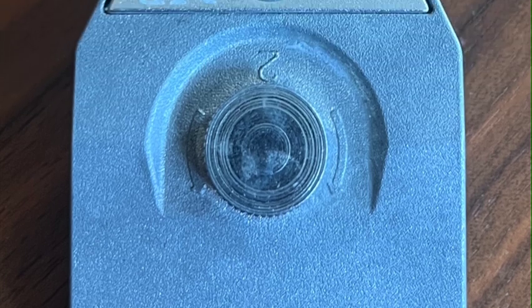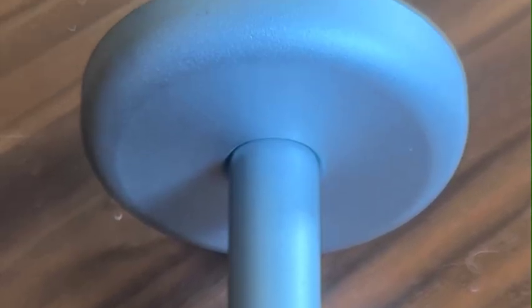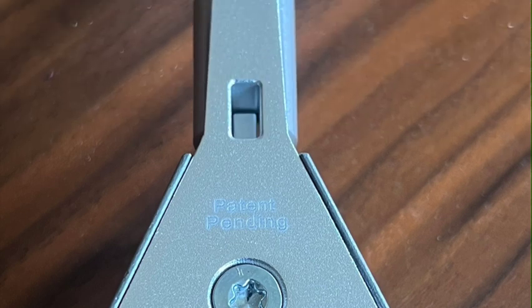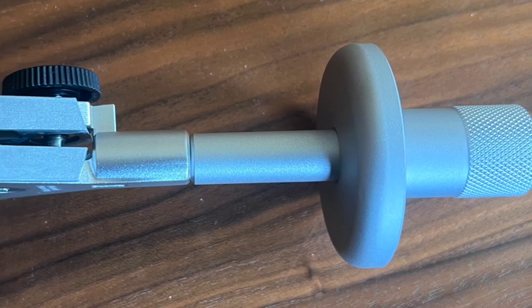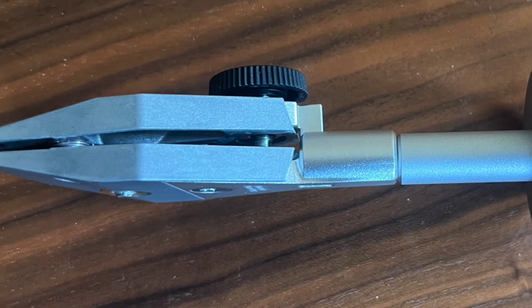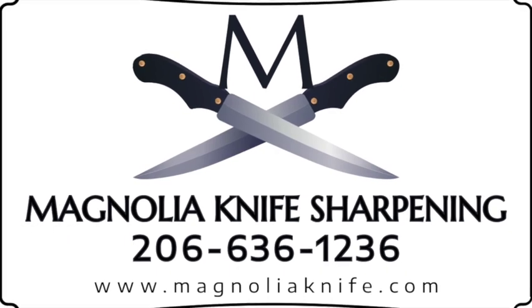There are a couple things to note. One is that you probably would want to put some Loctite in the screw where the shaft meets. And then I'm also experimenting with ways to add some friction to the tool rest. Anyway, these will be available on magnoliaknife.com soon. Email me or DM me if you'd like to learn more. Thanks.